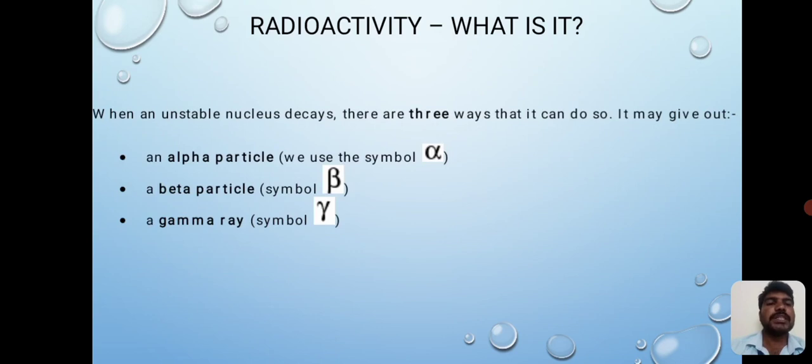When an unstable nucleus decays, there are three ways that it can do so. It may give out alpha particles, beta particles, and gamma rays.